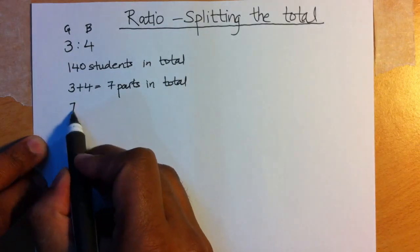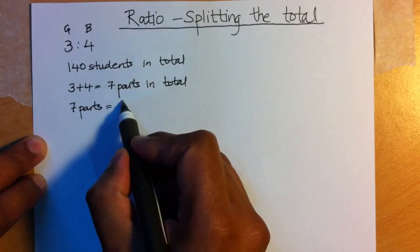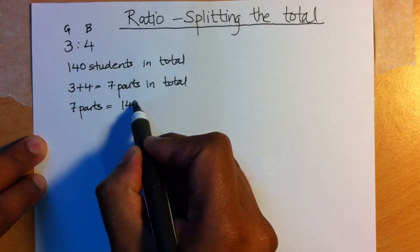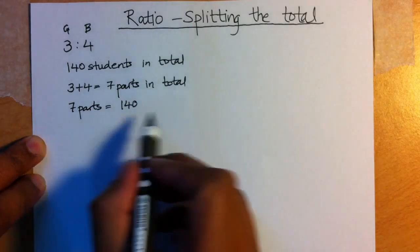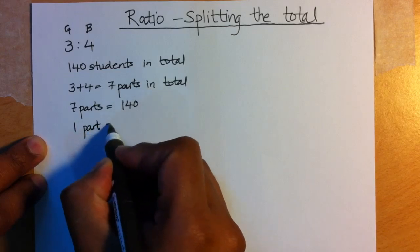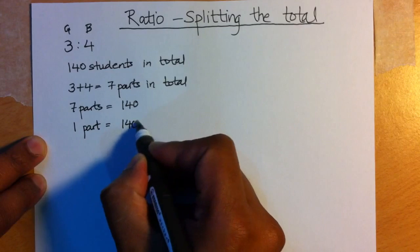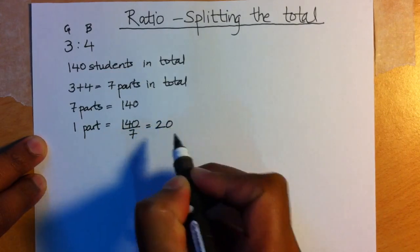So 7 parts equals 140 students, because that's the total number of students and that's the total number of parts. Well, from 7 parts, we can find out 1 part. 1 part is simply 140 divided by 7, which equals 20.